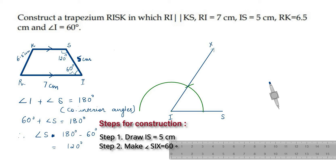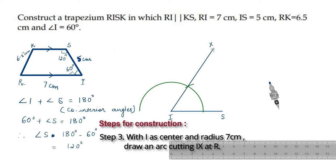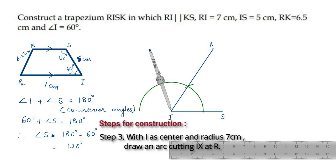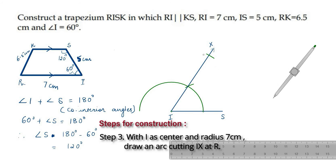Angle SIX is equal to 60 degrees. Now, IR is equal to 7 cm. So, open the compass equal to 7 cm and with I as center, draw an arc which cuts the ray IX at point R. So, IR is equal to 7 cm. Write the measurement IS equal to 5 cm and angle I equal to 60 degrees.